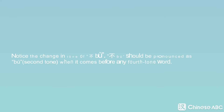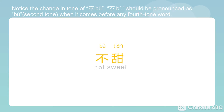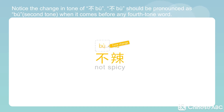Notice the change in tone of 不. 不 should be pronounced as 不 (2nd tone) when it comes before any fourth-toned word. Examples: 不酸 — not sour; 不甜 — not sweet; 不苦 — not bitter; 不辣 — not spicy.